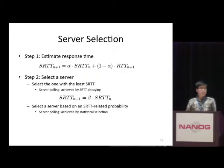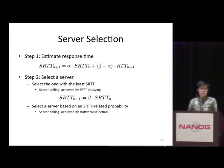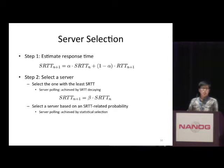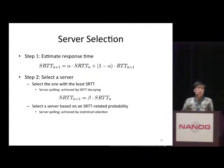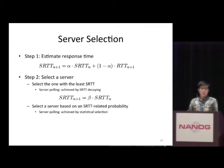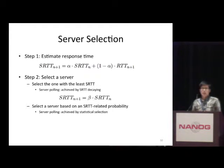Most cache resolvers will use the smooth round-trip time (SRTT) to estimate the delay to different name servers based on previous queries' round-trip time. Some cache resolvers use a strategy of selecting the name server with the least estimated round-trip time. For those unselected name servers, these cache resolvers will decrease their estimated round-trip time so that at some point they become the least one and can be queried again. In our tested cache resolvers, BIND 9.8 and PowerDNS use such a strategy.